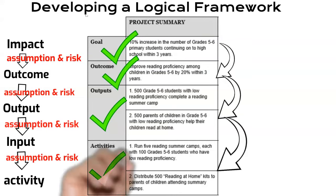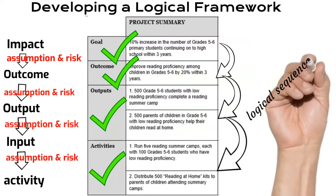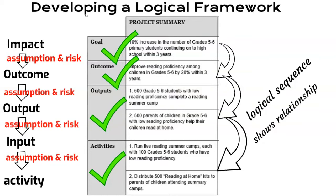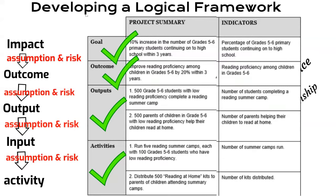We can see that there is a clear logical sequence and relationship between the goal or the impact, the outcome, the outputs, and the activities. But we also need to add a couple of new things, such as the indicators, which tell us how we are going to measure the results at each level.